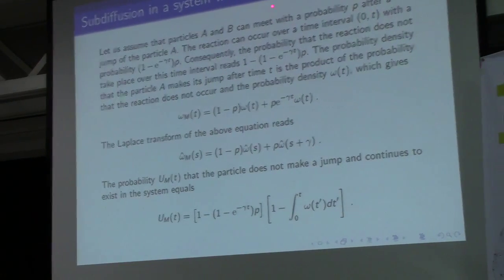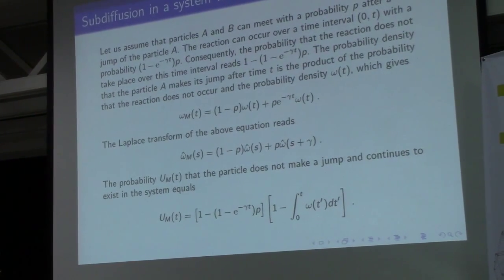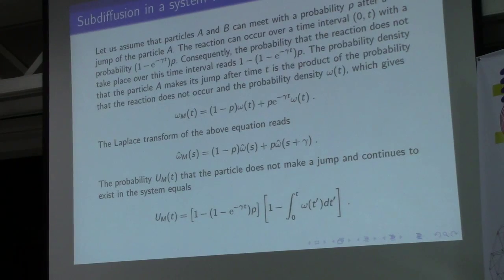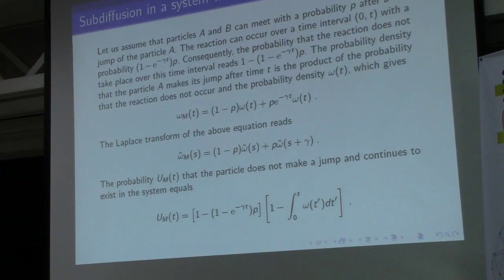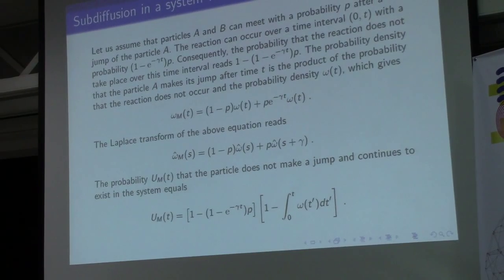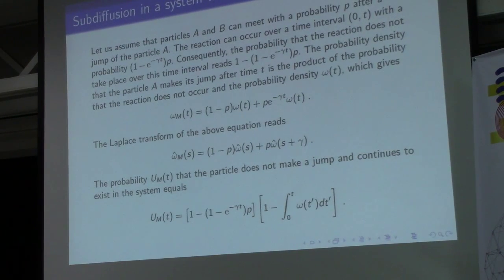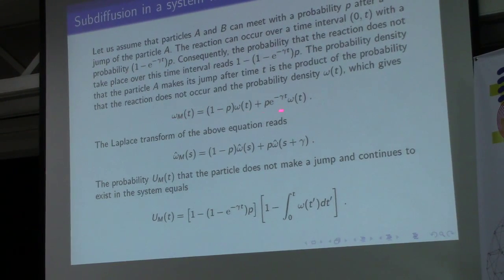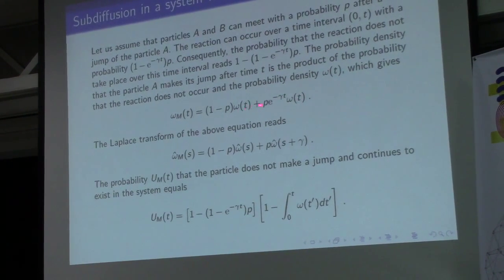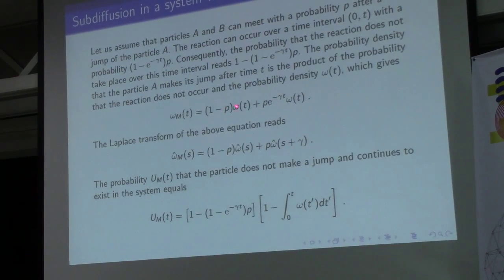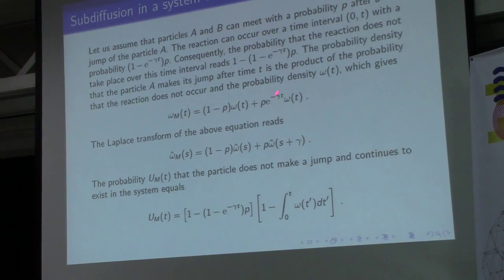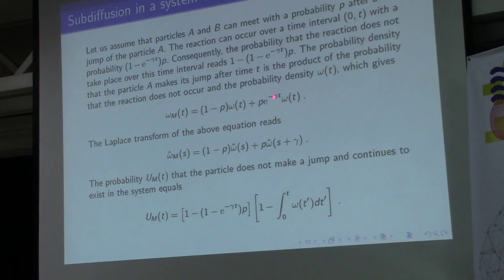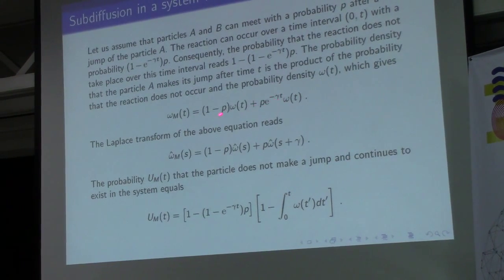For simplicity, let us assume that P is static and that the particles B are homogeneously distributed in the system. Then this function omega_M equals this quantity; this omega is the probability for the system without reactions, multiplied by appropriate probabilities.